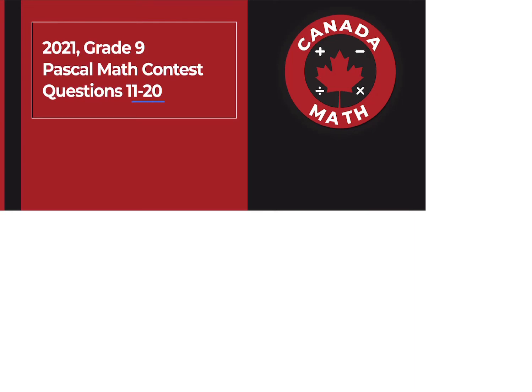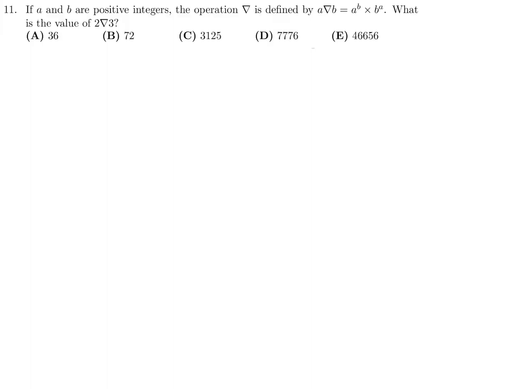Questions 11 through 20 on the 2021 Grade 9 Pascal Math Contest. If A and B are positive integers, the operation triangle is defined by A triangle B equals A to the power of B times B to the power of A. What is the value of 2 triangle 3?